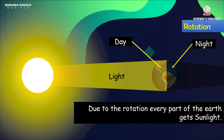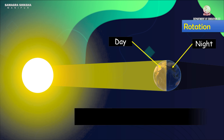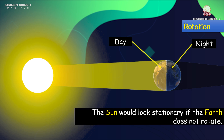If the earth did not rotate, the sun would seem stationary in the sky without any movement.